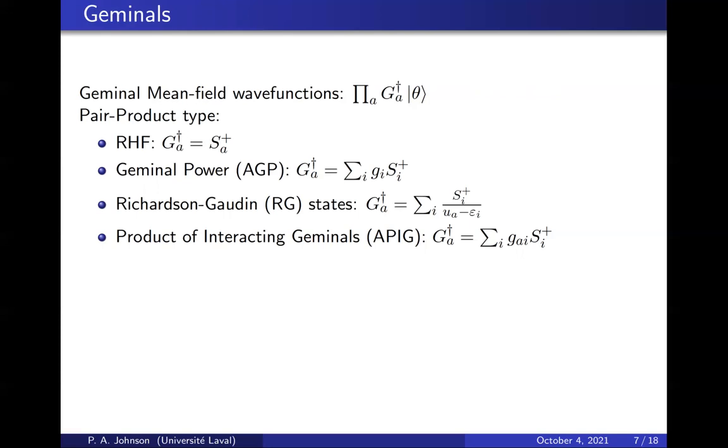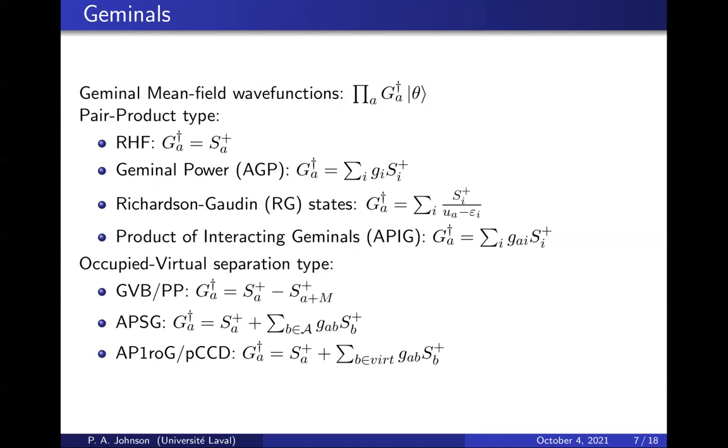Richardson-Gaudin pairs are similar. There are geminals that are parametrized by two sets of numbers that are related through a set of nonlinear equations, as we will see. This is also a variationally feasible wave function. The most general type of geminal is APIG, which is just arbitrary coefficients in your geminal. Unfortunately, this is not a feasible variational wave function, so we won't talk about it very much. So if you structure your geminal, there are many different cases. AGP and RG states are both variationally feasible.